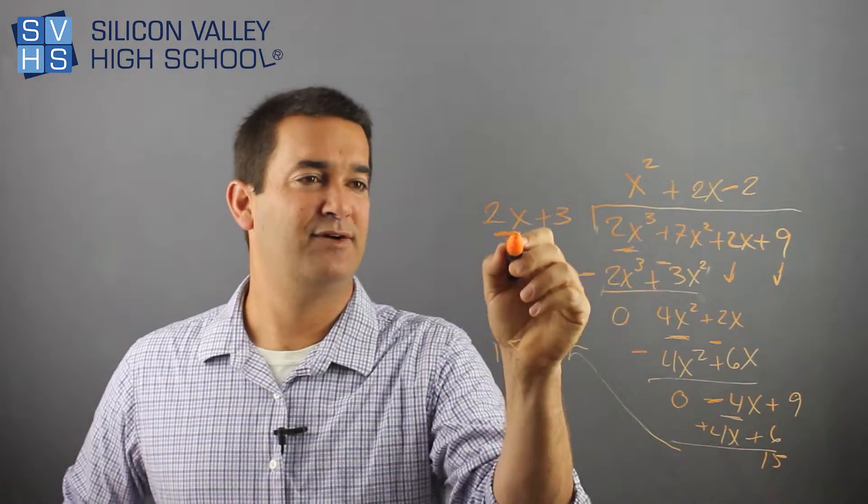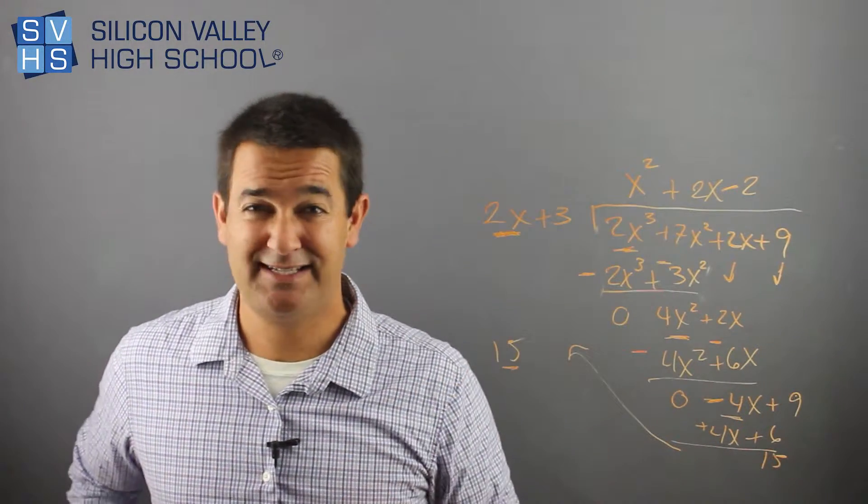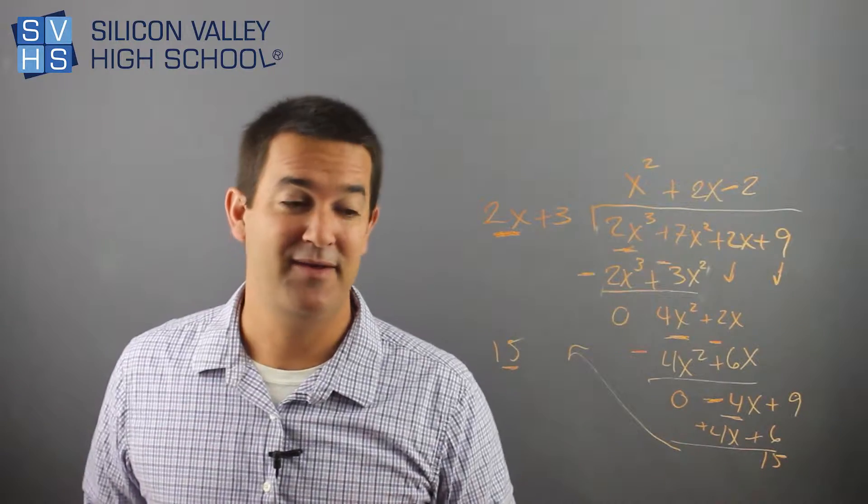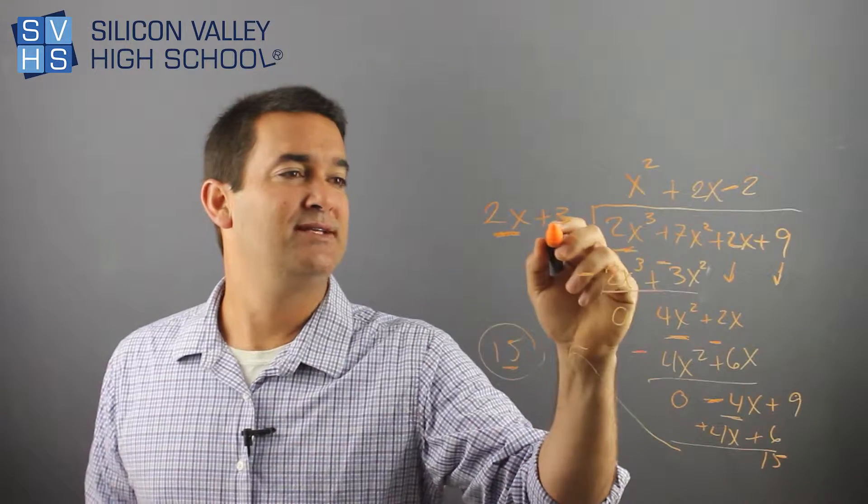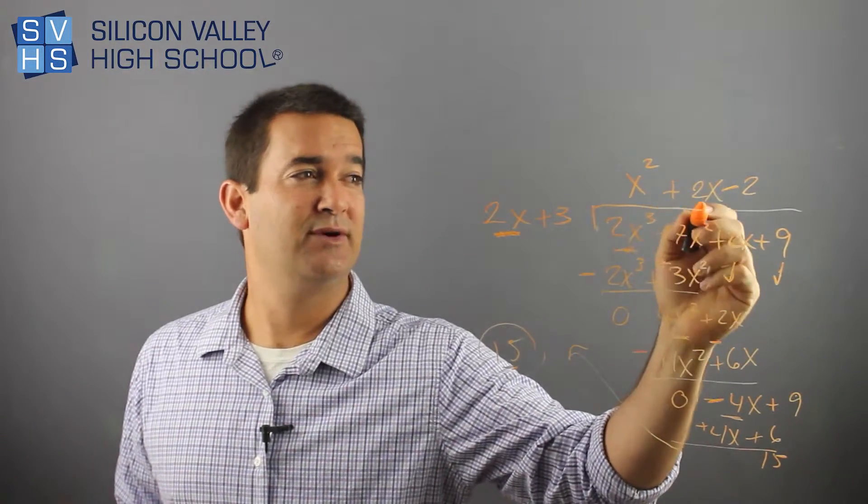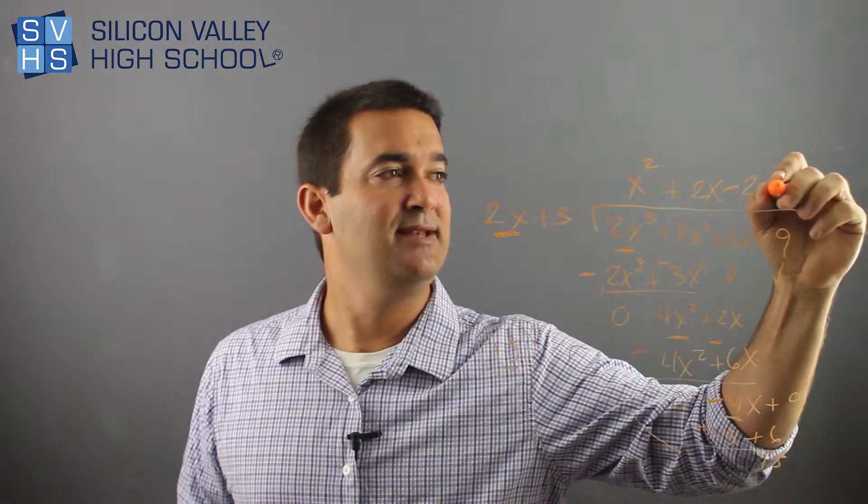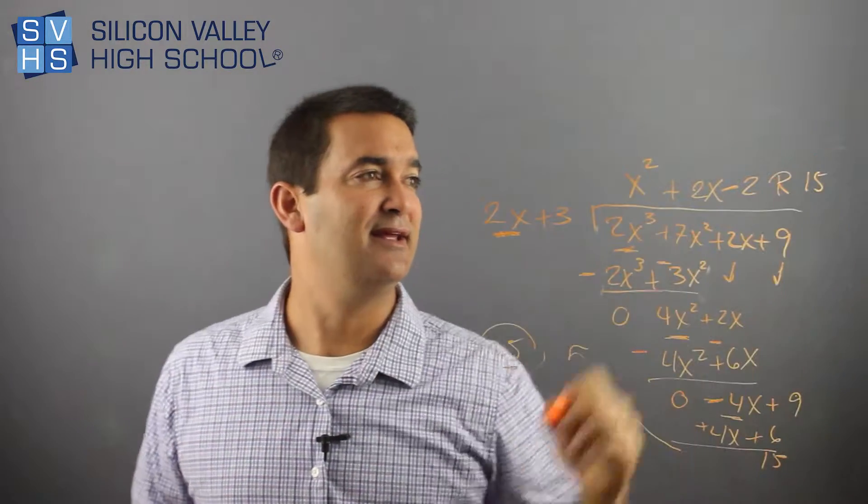Now, what do I do now? First guy into first guy. 2x does not go into 15, even on a good day. That's the remainder. That's how you know you're done with the problem. So, this went into this. x squared plus 2x minus 2 with the remainder of 15. Done.